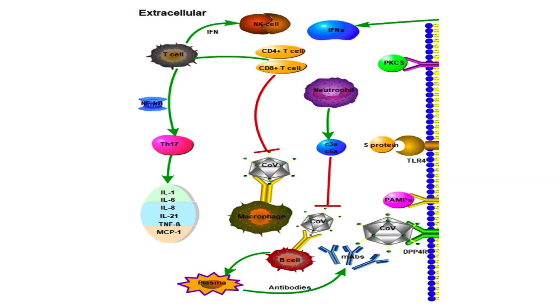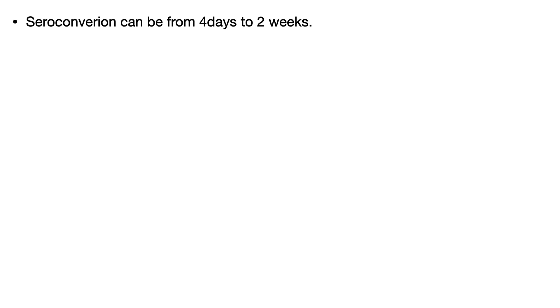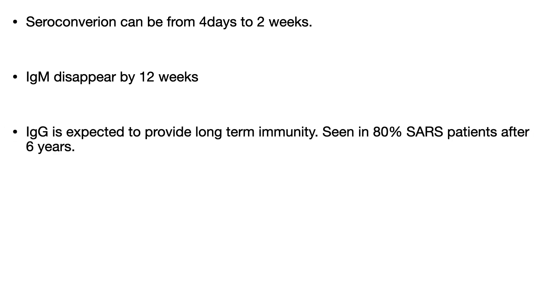Let us see how the adaptive immune response reacts to COVID-19. Interferon and NF-κB entering the circulation predominantly help T cells produce cytokines and recruit cells for cytotoxic activity, while B cells produce antibodies. Seroconversion can be seen from 4 days to 12 weeks — based on SARS data. IgM disappears by 12 weeks while IgG is expected to provide long-term immunity, seen in almost 80% of SARS infections even after 6 years.